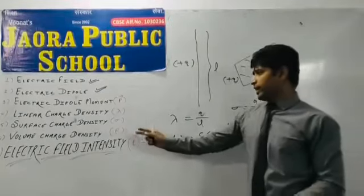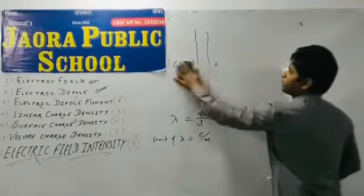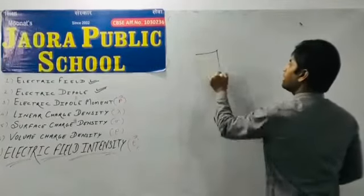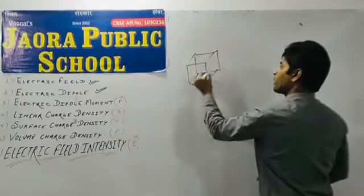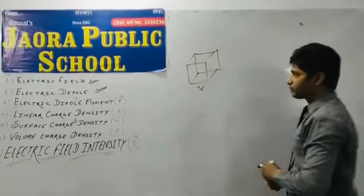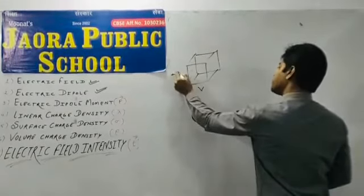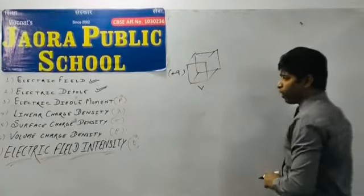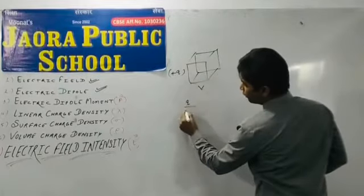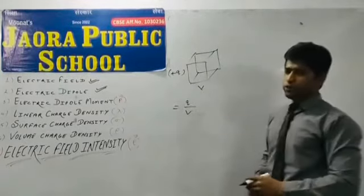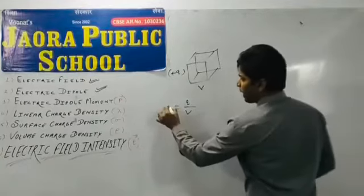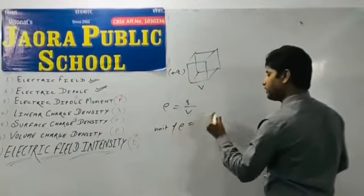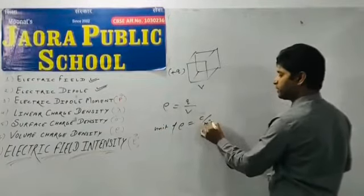And the third is volume charge density. So, like, an object of volume V, is charged by plus q charge. Then, charge present on unit volume of the body is q upon V. This ratio is called volume charge density, and is denoted by rho. And unit of rho is coulomb per meter cube.